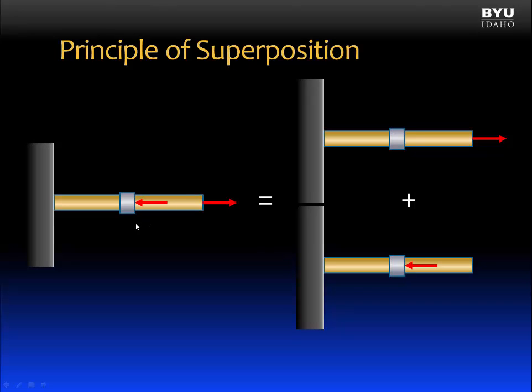Here's another example. This is an axially loaded member with two forces on it. We can take this somewhat complex condition and break it into two simpler structures. We could calculate the deflection in each one. Then we can get the total deflection for the original structure by adding the deflections of these two separate problems together. That's going to be very useful to us, and it allows us to solve some problems we could not do before.